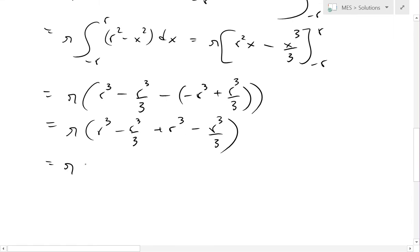Simplifying this, we get, we get basically pi. This r cubed adds up, so 2 r cubed, and now minus, this is negative 2 r cubed over 3. Now this one we can just multiply by 3, 3 at the top and bottom to get the same common denominator so we can add these up.